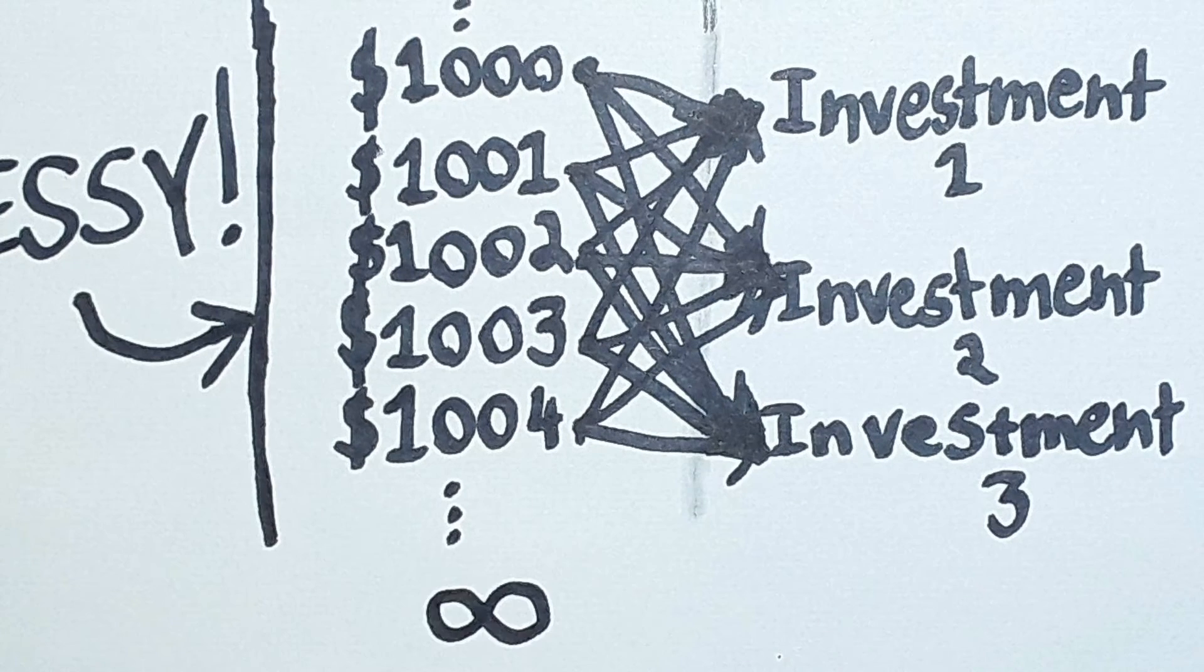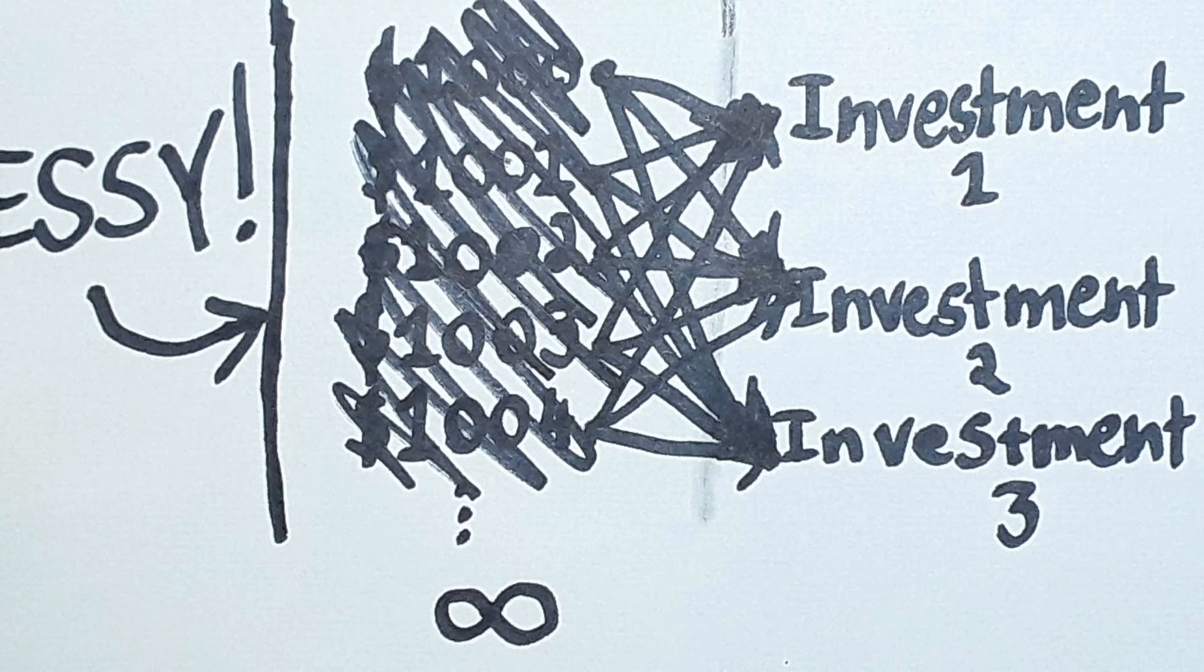But as soon as there's a chance at infinite utility on the table, it obliterates the finite and we could zero in on it. Now we have a framework to deal with the expected utilities of each worldview.